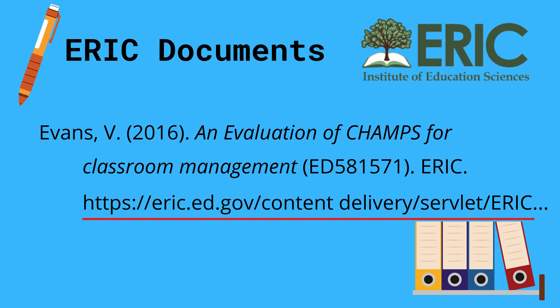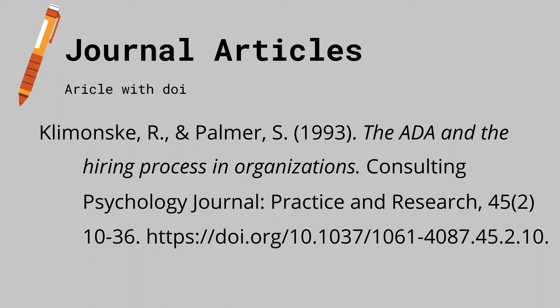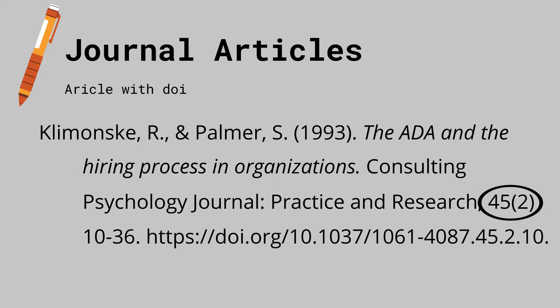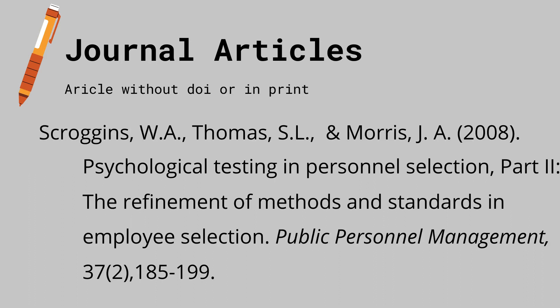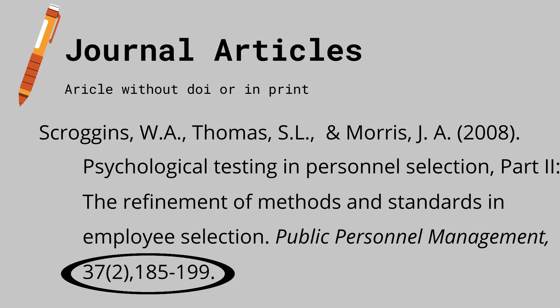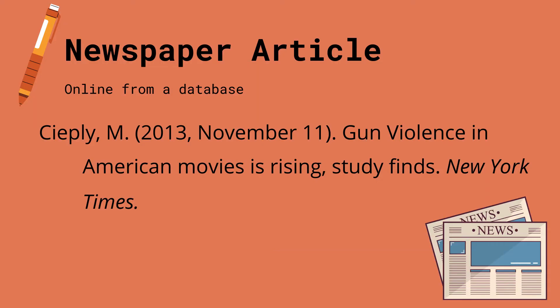You may also include the link of the ERIC document. For journal articles with DOI, the title of the journal should be in italics, followed by the publishing journal, the volume or issue numbers, page numbers, then the DOI. For journal articles without DOI or in print, the publishing journal in italics, the volume or issue numbers, then the page numbers.